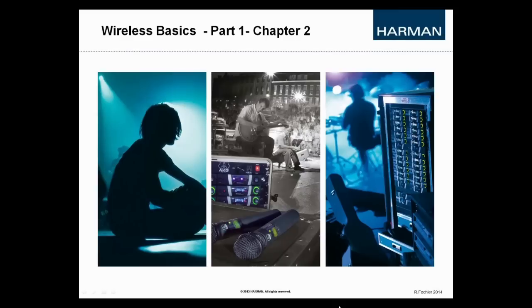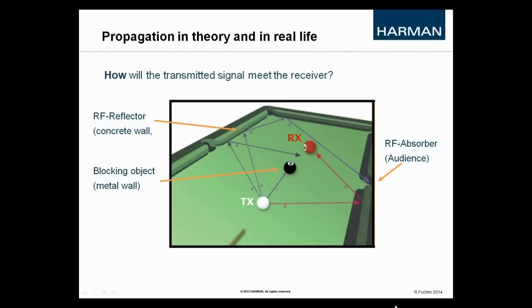So let's start with an analogy from a real life example. Let me take this picture of a billiard table to explain the chances for a radio signal to travel from a transmitter to a receiver and what could inhibit this from being completed successfully. Let's pretend that the white ball is our transmitter and the red one would be our receiver and we want the signal to travel the shortest possible way.